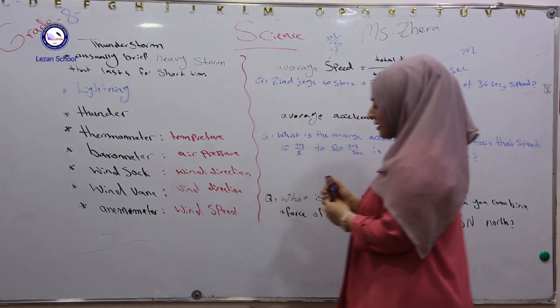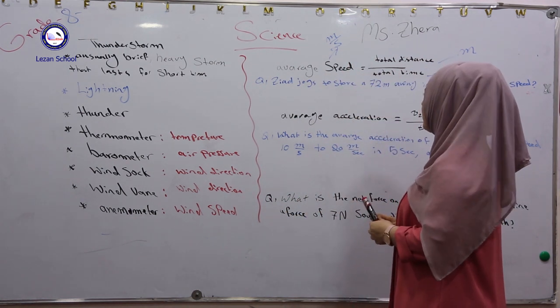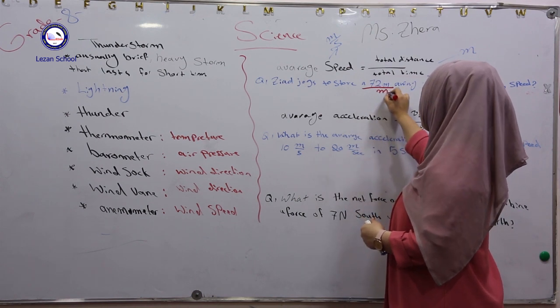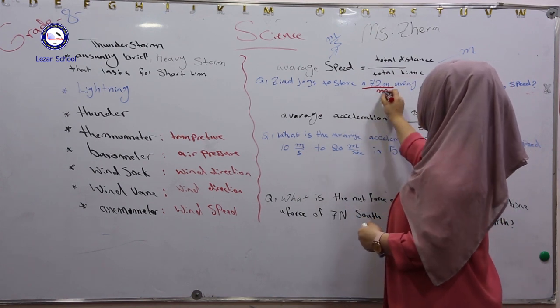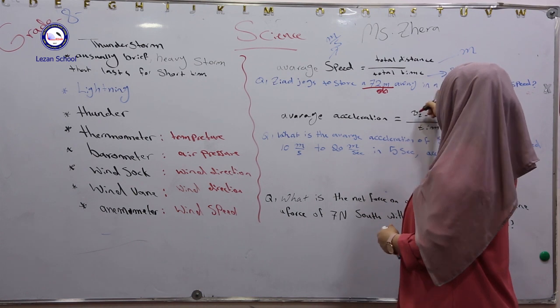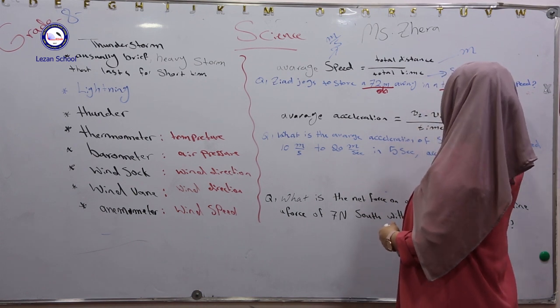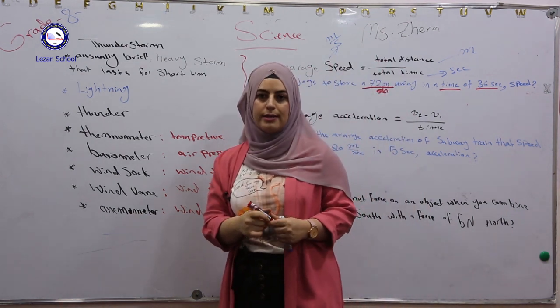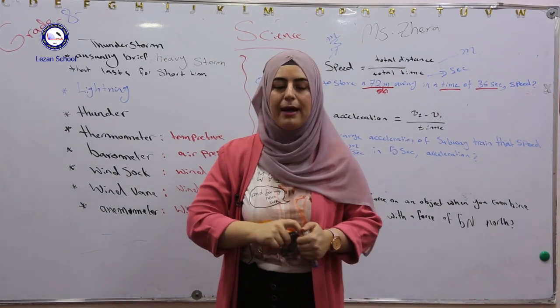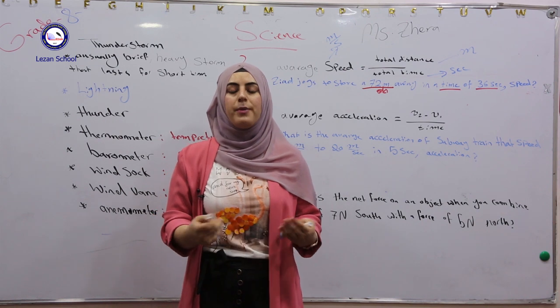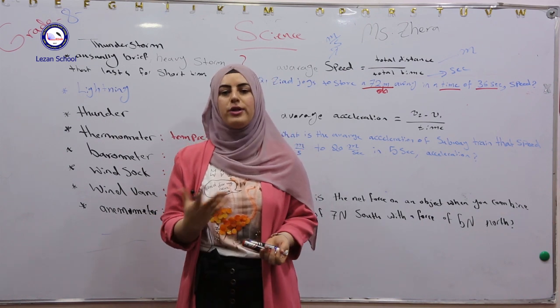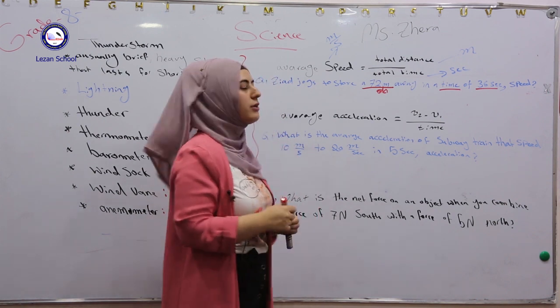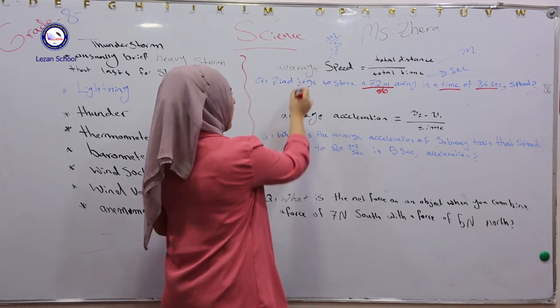We have a question here. Zad walked 72 meters, this is distance, in a time of 36 seconds. The first thing in each question on the exam: you have to know which information we have in the question and what you need. To find that out, the third step is write down what's the rule you're using to solve the question.